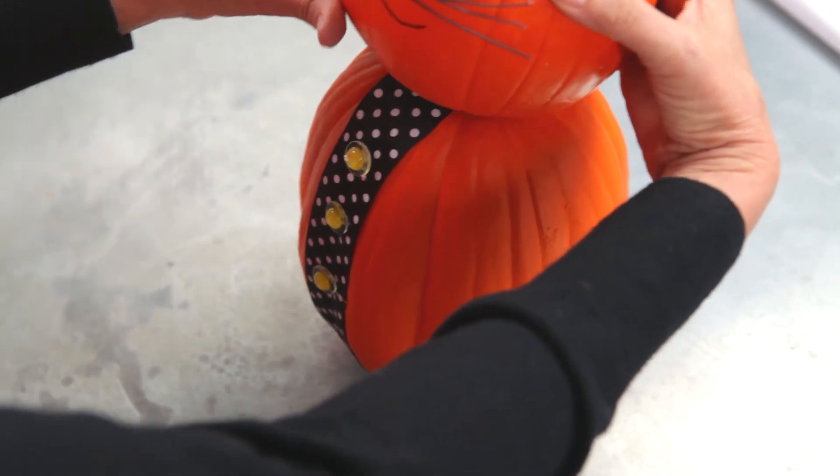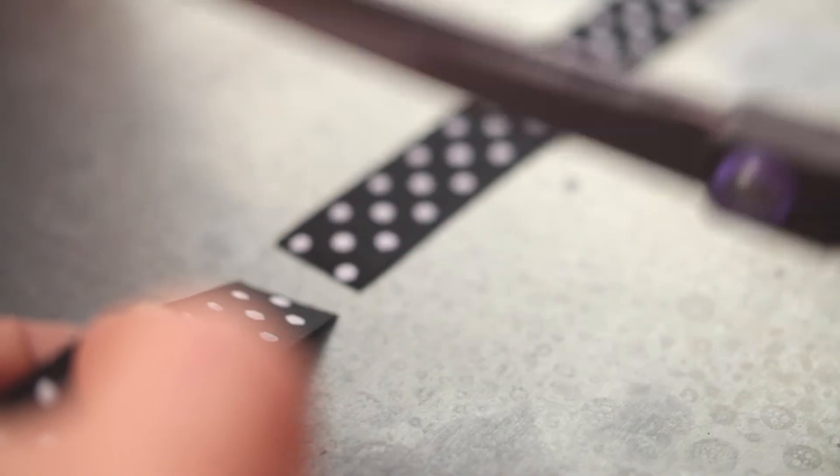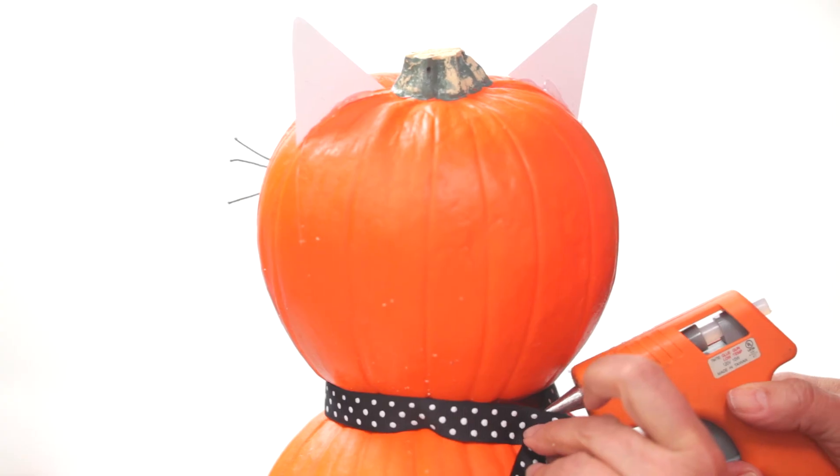Then glue the head to the body. Now make the cat's bowtie. Cut a piece of ribbon long enough to wrap around the neck. Glue the ends together.